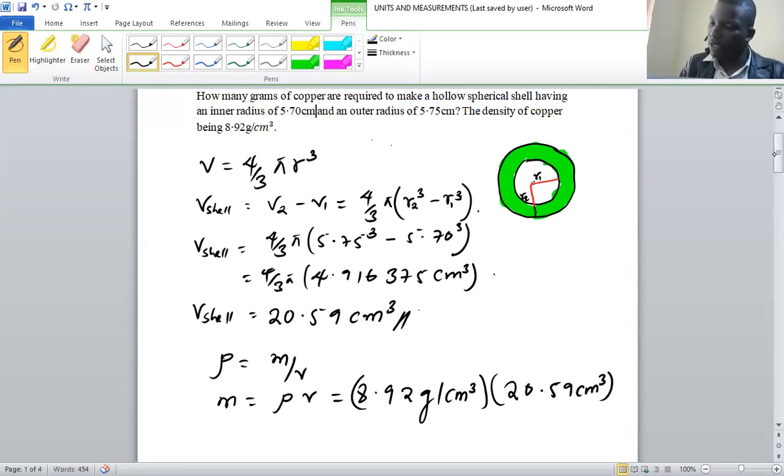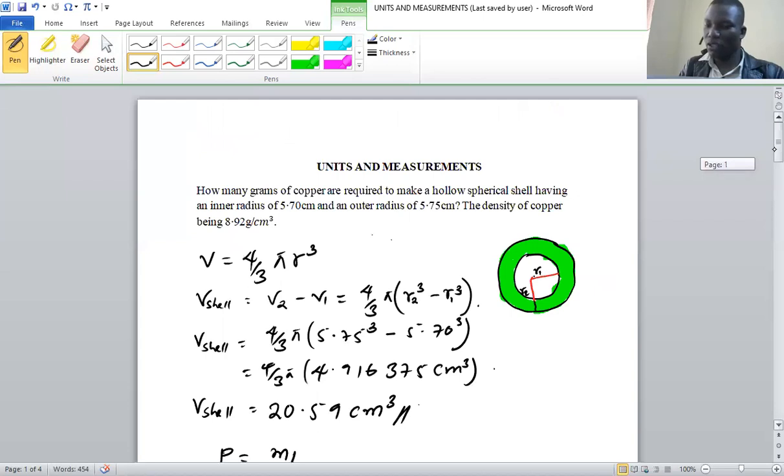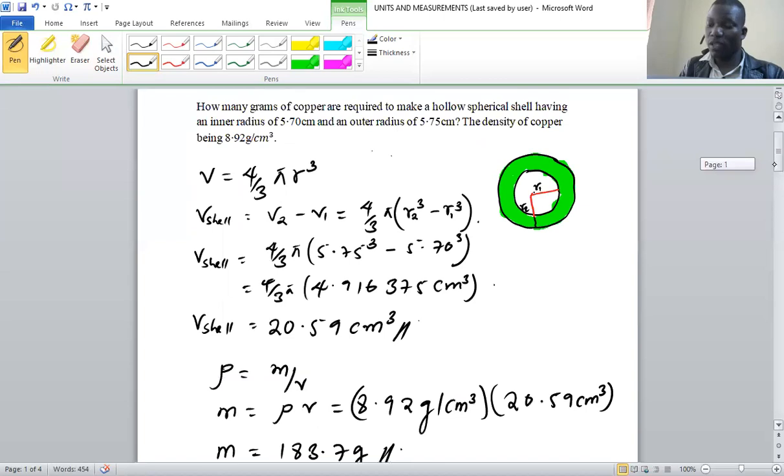So if you punch that on the calculator, we are going to have the mass of 183.7 grams. So that would be the mass that you'll be required to, or that will be the mass of the shell with that volume that we have found.